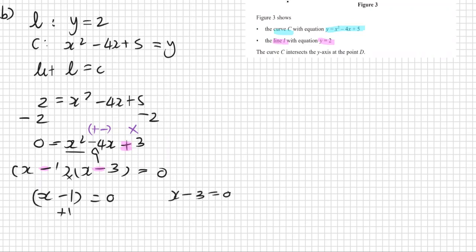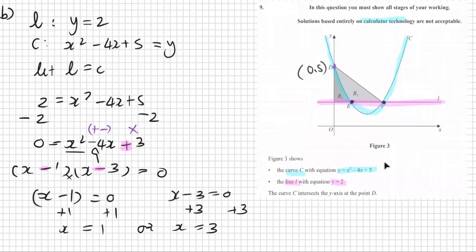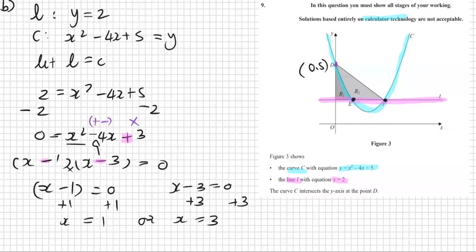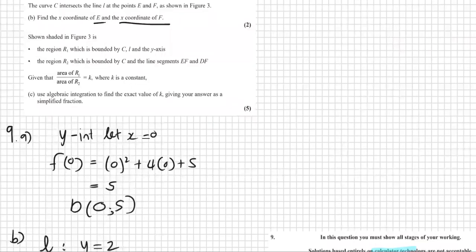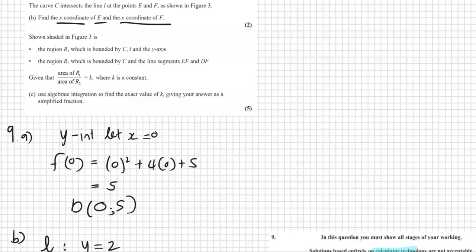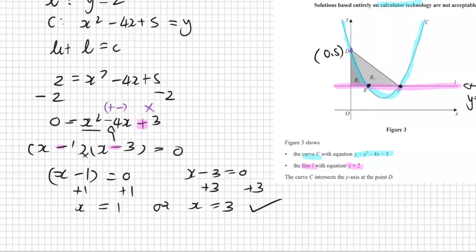Because we have two brackets which are timesing each other equal to zero, one bracket has to be zero, because anything times zero equals zero. So x minus 1 is equal to zero, x minus 3 is equal to zero. Therefore, if you plus 1 on both sides, plus 3 on both sides, we have x is equal to 1, or x is equal to 3. The question asked for, what did the question ask for? Find the x coordinates of E and the x coordinate of F. So we are actually complete over there.